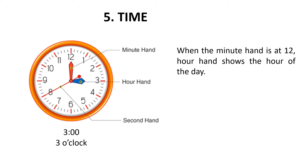The hour hand takes one hour to move from one number to the next. In this time, the minute hand will complete one full rotation. So we can say that one hour is equal to 60 minutes — when the minute hand completes one rotation, it takes 60 minutes.